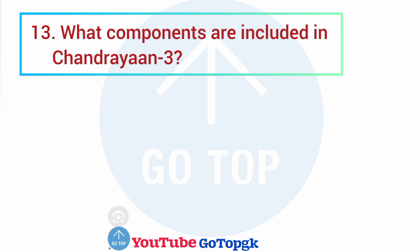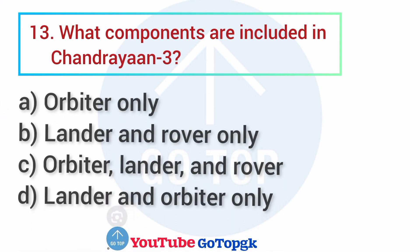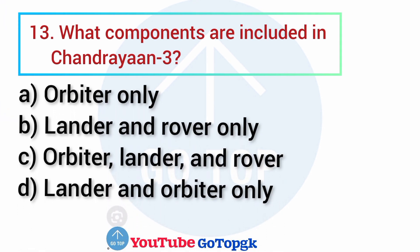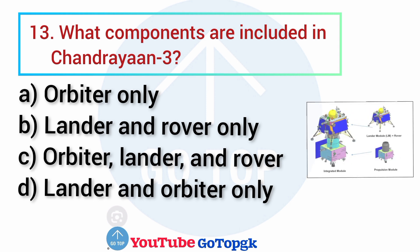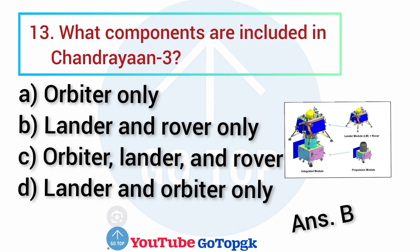Question No. 13. What components are included in Chandrayaan-3? Options: A. Orbiter only, B. Lander and rover only, C. Orbiter, lander and rover, D. Lander and orbiter only. Your correct answer is option B: Lander and rover only.